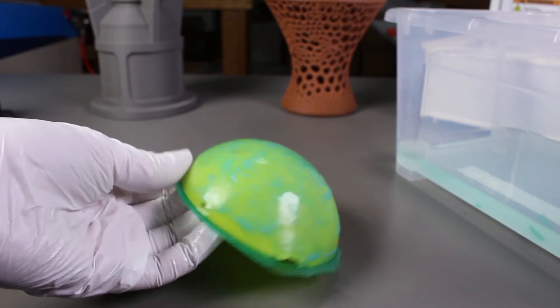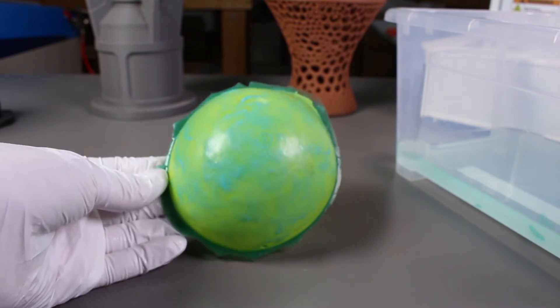So after washing and drying out the print, we can start to sand the resin down to make it more even and smooth.